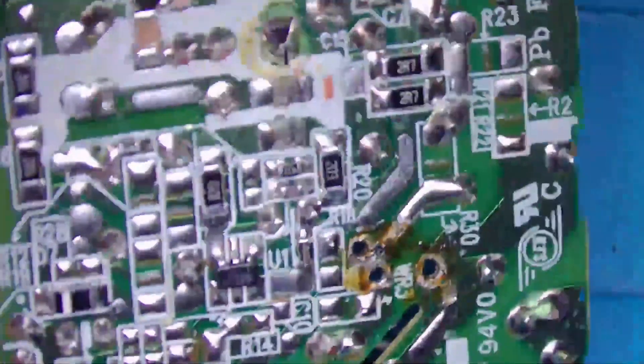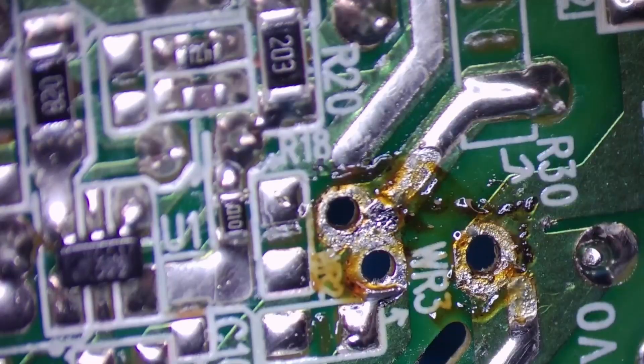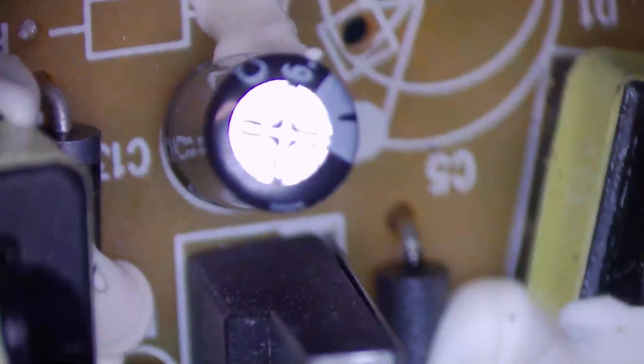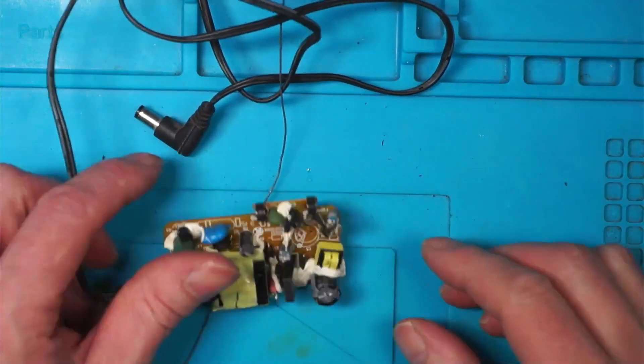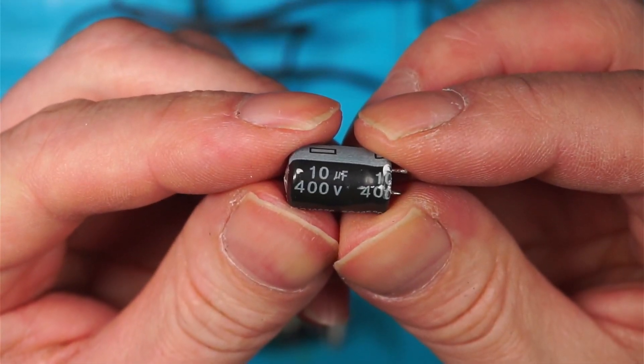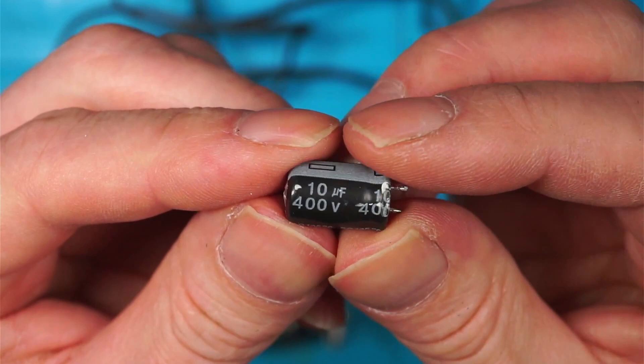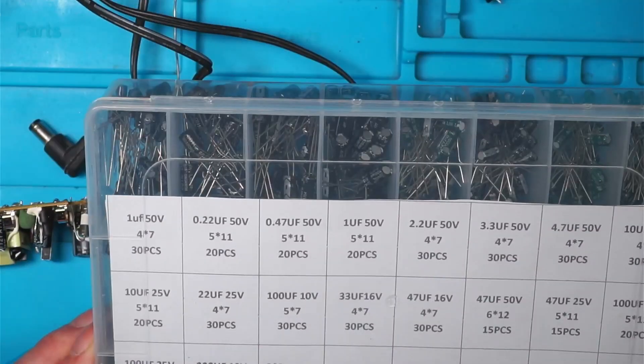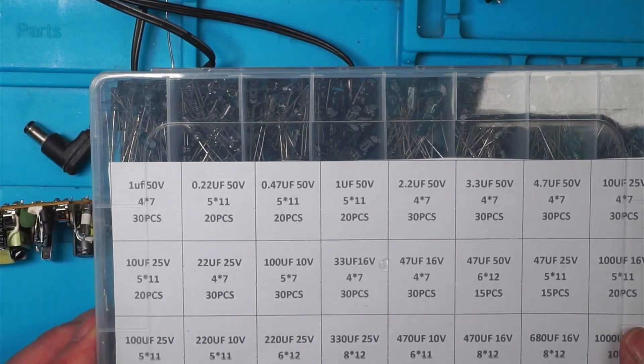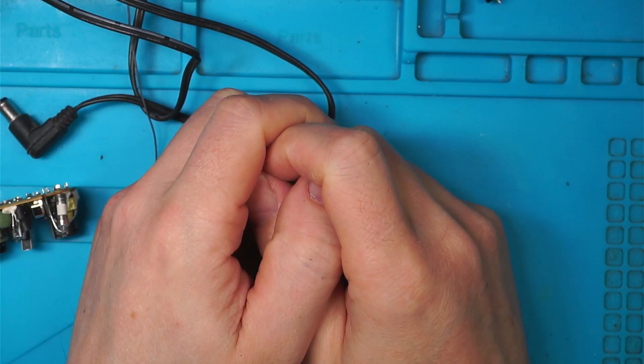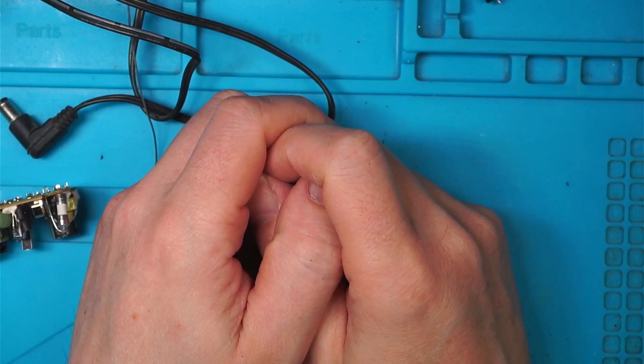Now I don't know why I've got two holes there. They both seem to be joined together. Yeah. Right. So I have 10 microfarads, 400 volts. Let's see if I've got a replacement. No, I haven't. Oh, bugger. What am I going to do now? I'm stuck now. I'm going to have to look at some old boards, I think. I'll be back in a minute.